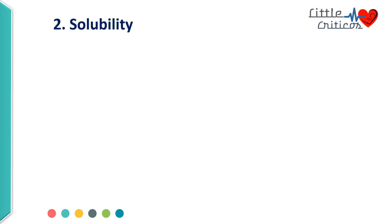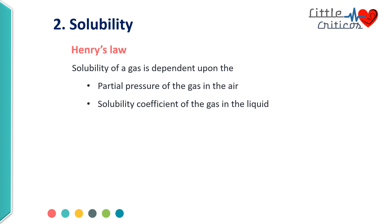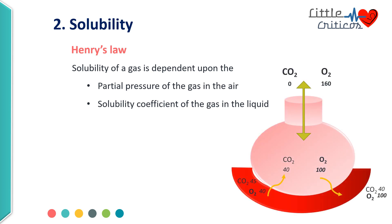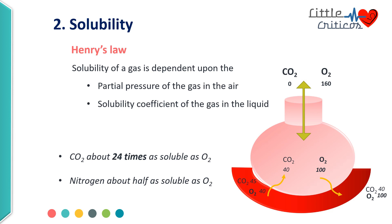The second factor is the solubility of gases. Henry's law states that solubility of a gas depends on its partial pressure in air and the solubility coefficient in the liquid. Carbon dioxide has a partial pressure of approximately 40 at the alveolar end and 45 at the venous end, causing movement of CO2 from blood vessels into alveoli. Oxygen has a partial pressure of 100 at the alveolar level and 40 at the venous end, causing movement of oxygen from alveoli into blood vessels. Carbon dioxide is 24 times as soluble as oxygen, and nitrogen is about half as soluble as oxygen; thus, diffusion of carbon dioxide is faster than oxygen.